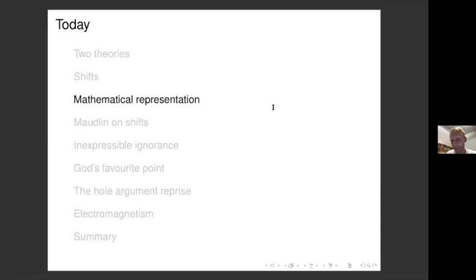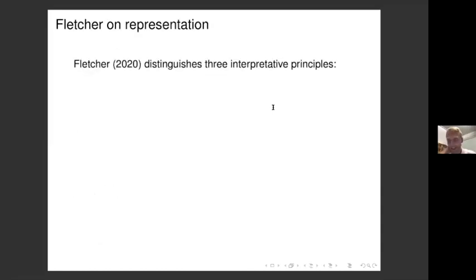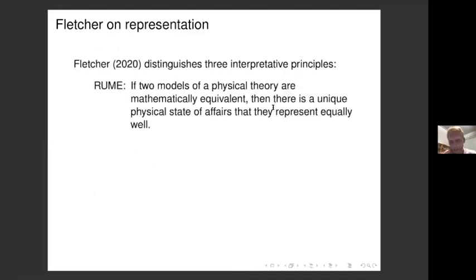Now some brief remarks on mathematical representation, essentially giving you the central claims of Sam Fletcher's paper. Fletcher distinguishes three interpretive principles. The first, RUME — representational uniqueness by mathematical equivalence — says: if two models are mathematically equivalent, there is a unique physical state of affairs that they represent equally well. Fletcher thinks this is wrong: you have a menu of isomorphic models associated with static shifts and a menu of haecceitistically distinct possible worlds, and each model is equally apt to represent any of those worlds.